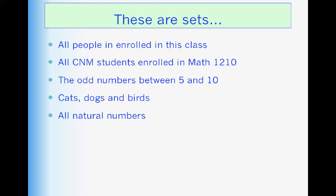So these are sets. All people enrolled in this class. All CNM students enrolled in Math 1210. The odd numbers between 5 and 10. Cats, dogs, and birds. All natural numbers. So let's see if we can come up with a definition of a set.